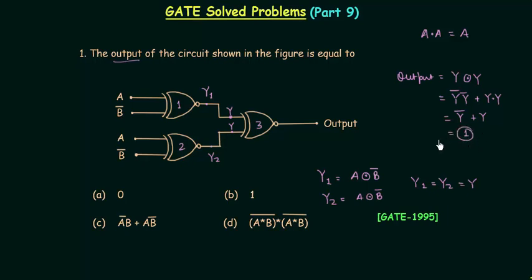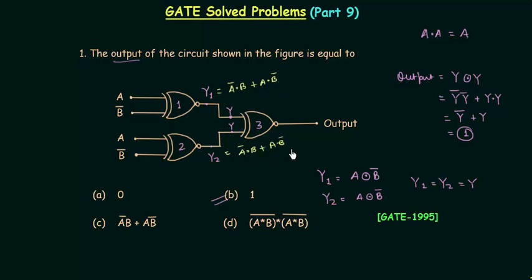So the output is going to be 1, and option B is the correct answer. You don't have to solve it by substituting a and b complement directly — that would be a very lengthy approach. Instead, just use the property of the XNOR gate to get 1 as the answer directly.